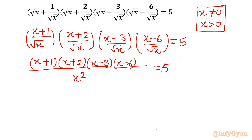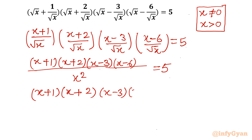So I can write (x+1)(x+2)(x-3)(x-6) equal to 5x². This is one quartic equation, so we will get four solutions. Now we have to check which solutions are real and which are not.